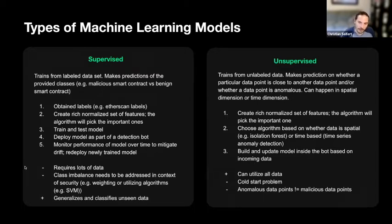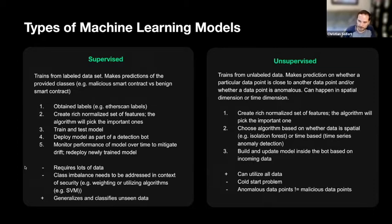To create an unsupervised machine learning model, you create a rich, normalized set of features — very similar to the supervised approach. Then you choose an algorithm based on whether you want to carve it spatially or time-based. For spatial, isolation forest is a great algorithm. For time-based, time series anomaly detection.